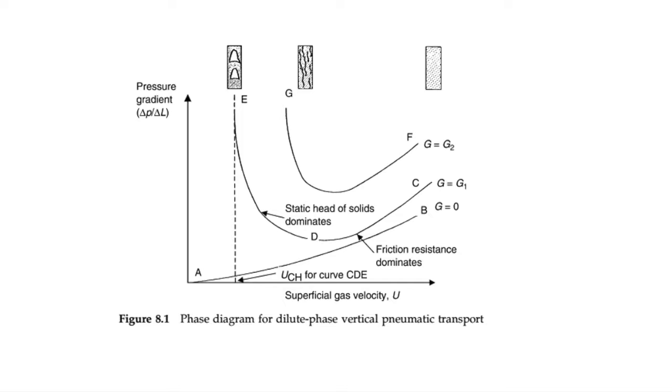This diagram conveys the relationship between the gas velocity and the pressure drop. Line A to B describes a scenario where the stream flowing through the pipe only consists of gas. G equals zero when G stands for concentration.